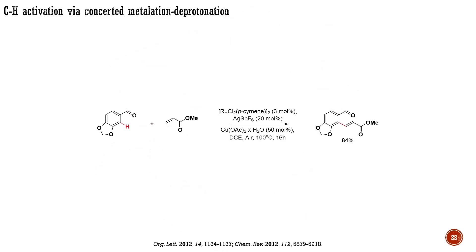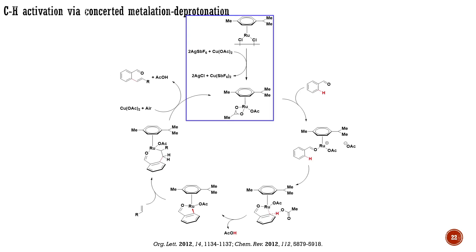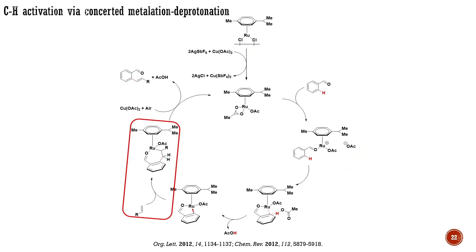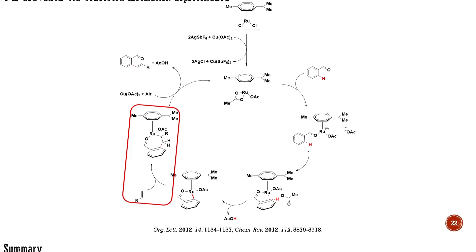The final example for today is the ruthenium-catalyzed CH olefination of arenes, published in 2012. In this case as well, the initial step of the process involves silver-mediated formation of the active form of the catalyst through the substitution of chlorides by acetates. The active form of ruthenium-2 first coordinates to the substrate, followed by a concerted metallation deprotonation sequence forming this cyclometallated intermediate. The next step includes a HEC-type insertion, followed by beta-hydride elimination, generating the product. The active catalyst is reproduced through a sequence of reductive elimination followed by the oxidative regeneration of the ruthenium-2 catalyst, enabled by copper-2 acetate.